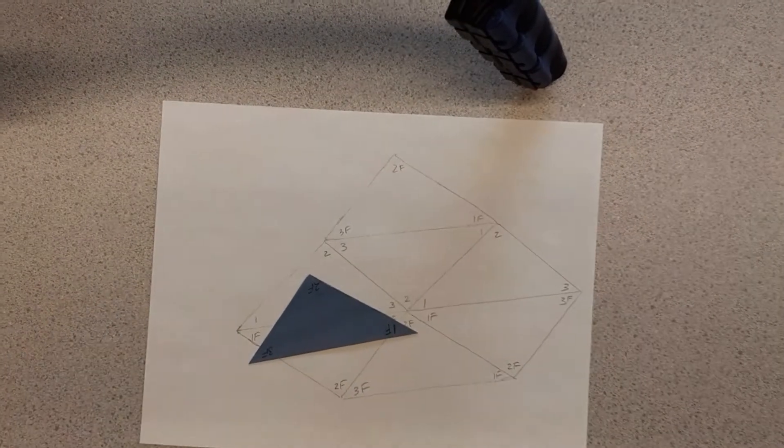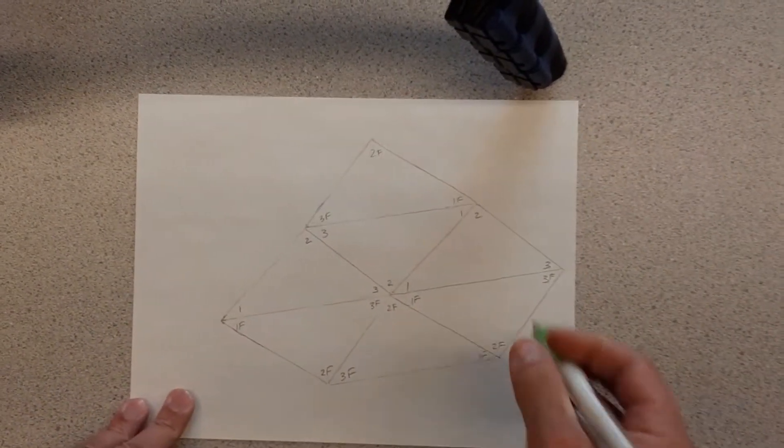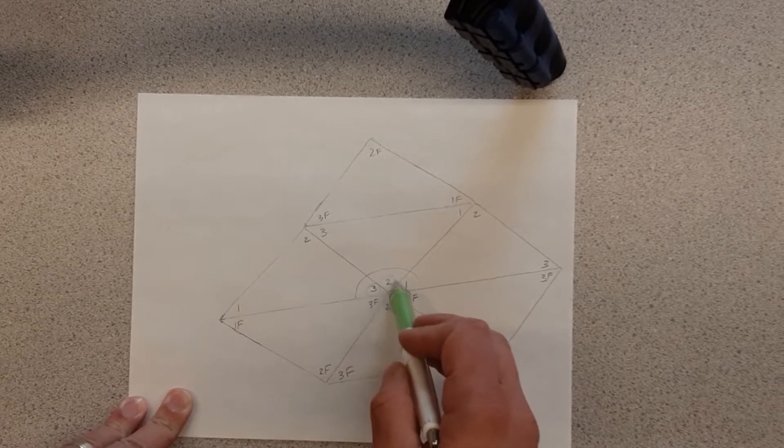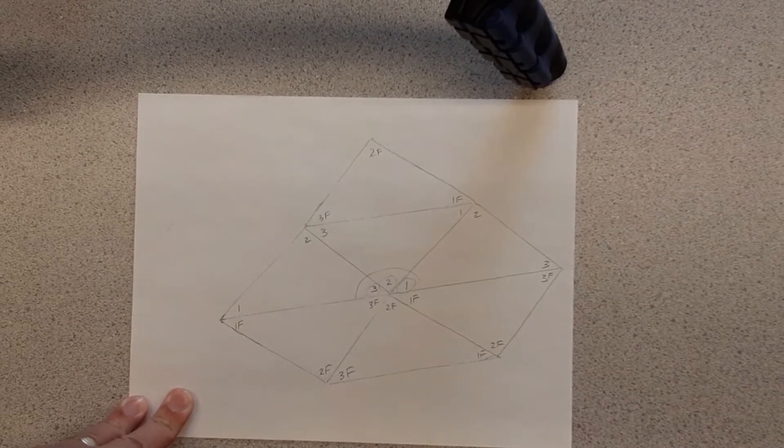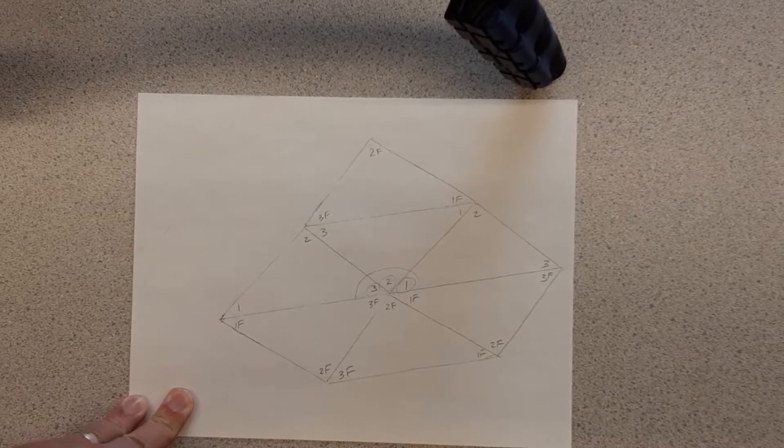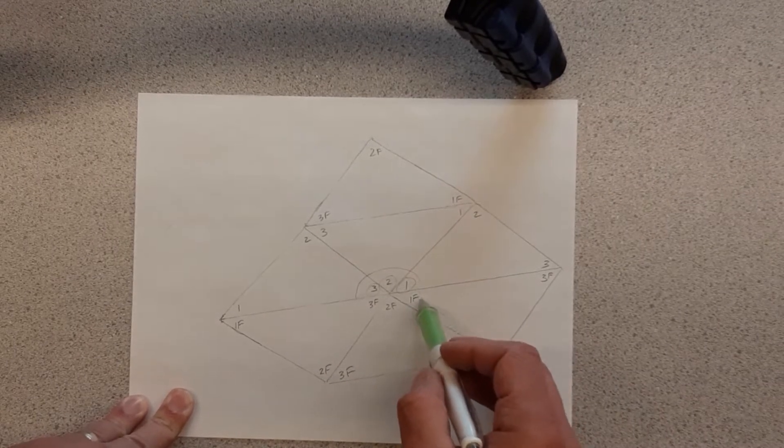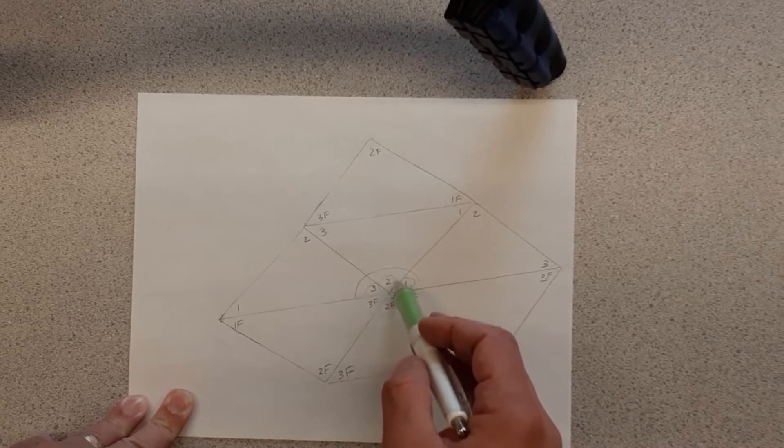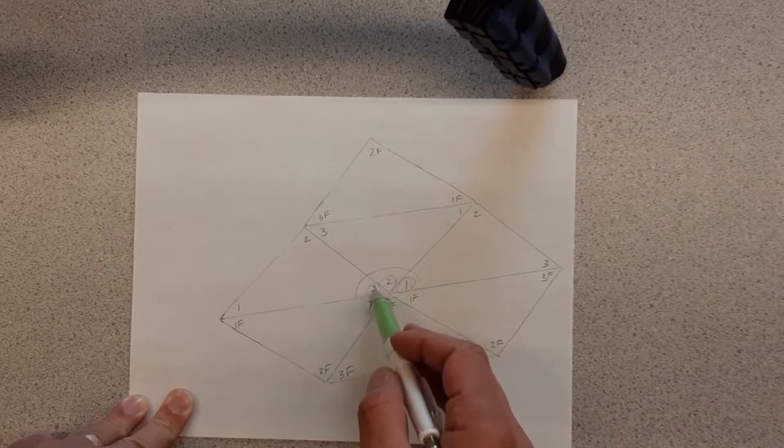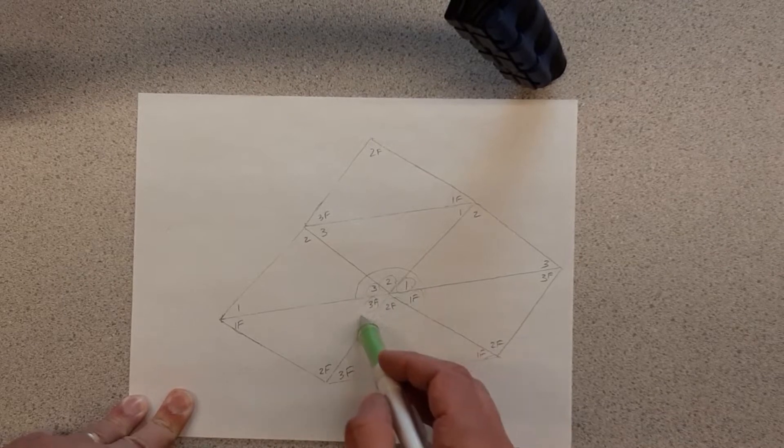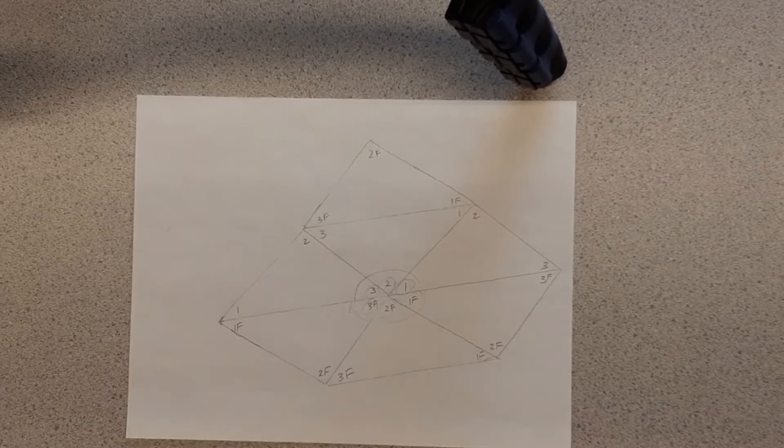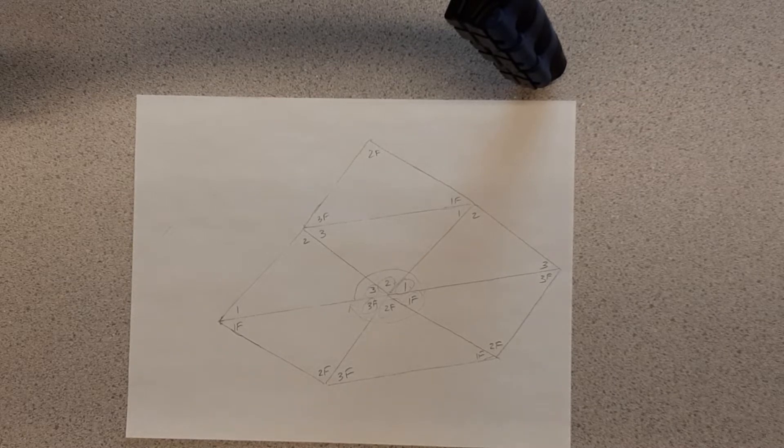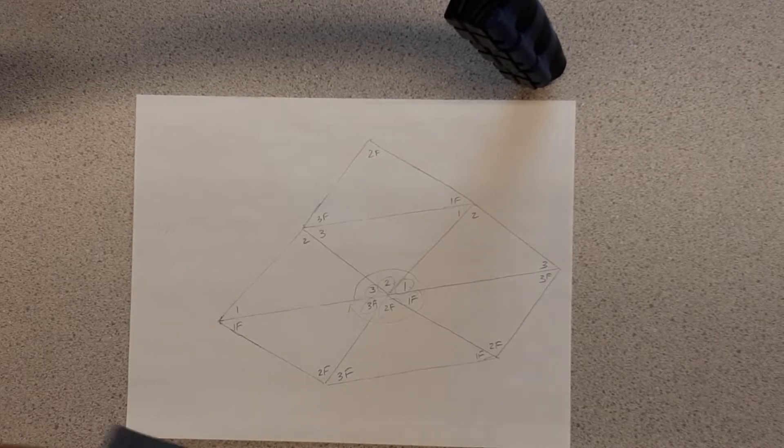Now I don't want to draw all of this out for you. But again, you might notice, going across here, I've got angle 3, angle 2, angle 1. Adding all those together is going to give me 180 degrees. I have angle 1 flip, which is the same as angle 1. I have angle 2 flip, which is the same as angle 2. And 3 flip, which is the same as angle 3. That's also 180 degrees, so I'm still getting the 360 degrees at any vertex. So that's why this one still works.